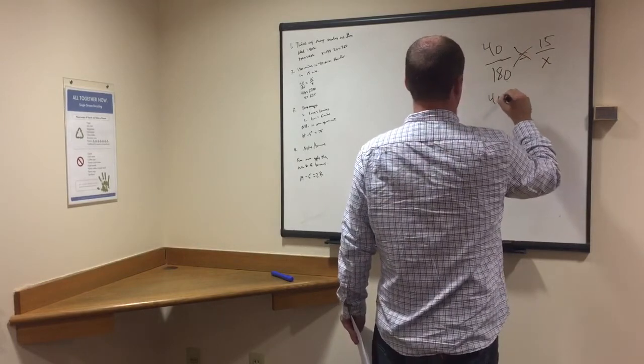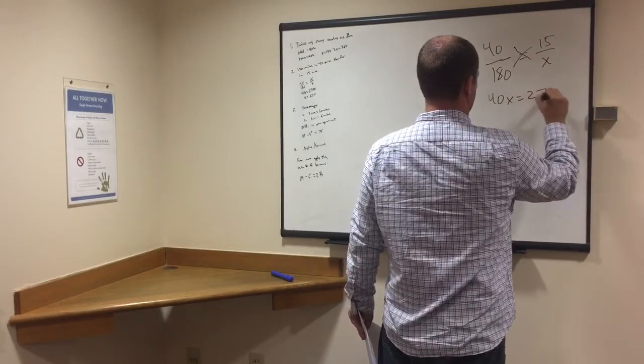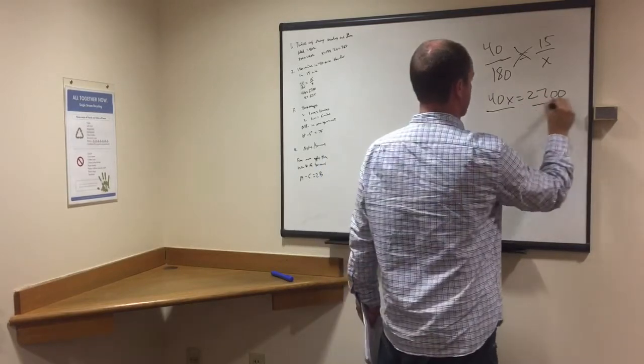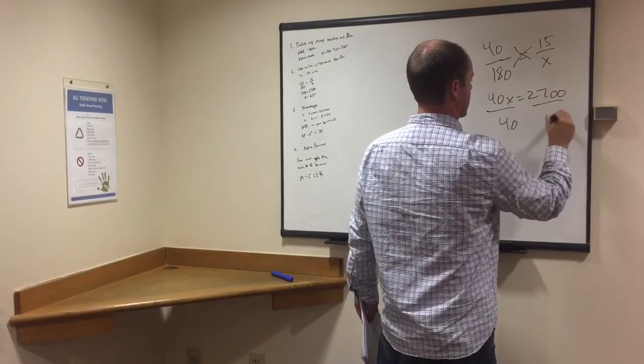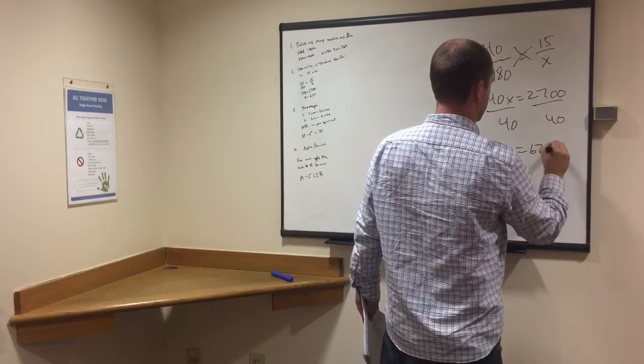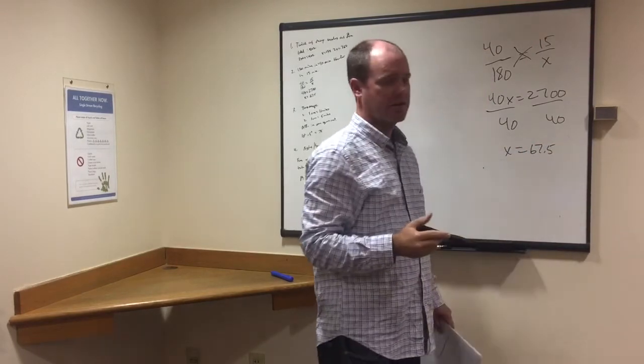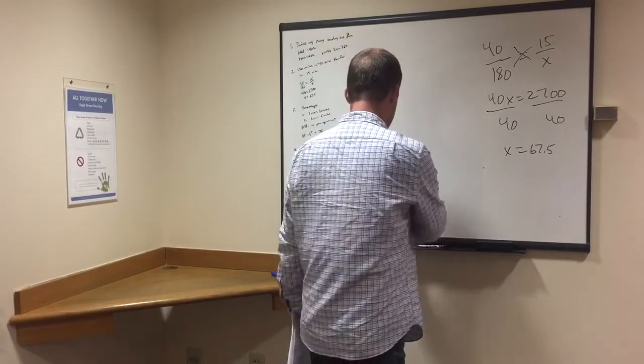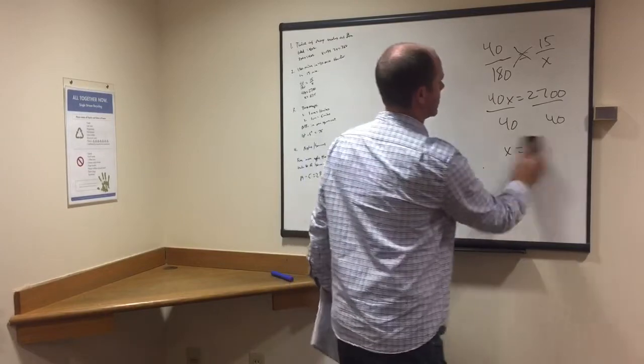Alright, cross multiply, 40x equals 2700, that's 180 times 15, divide by 40 each side. And x equals 67.5. Alright, and that would be our answer, if that makes sense. It's a decent amount less than 90, like we said in the beginning.